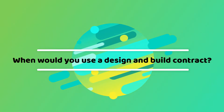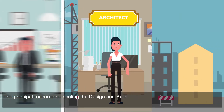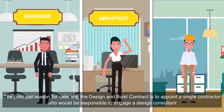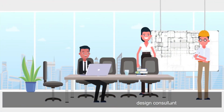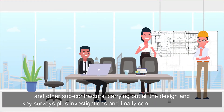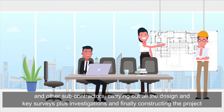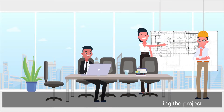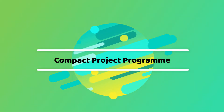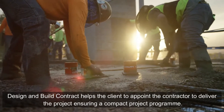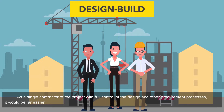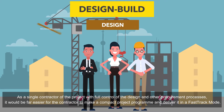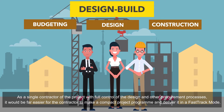When would you use a design and build contract? The principal reason for selecting the design and build contract is to appoint a single contractor who would be responsible to engage a design consultant and other subcontractors, carrying out all the design and key surveys plus investigations, and finally constructing the project. The design and build contract helps the client appoint the contractor to deliver the project, ensuring a compact project program, as a single contractor of the project with full control of the design and other procurement processes.